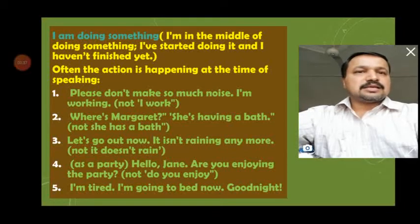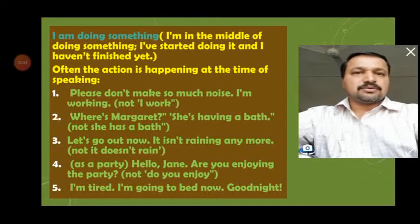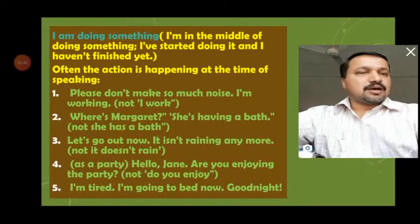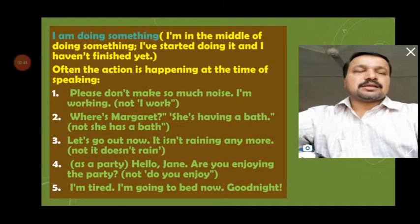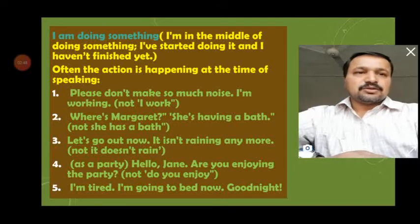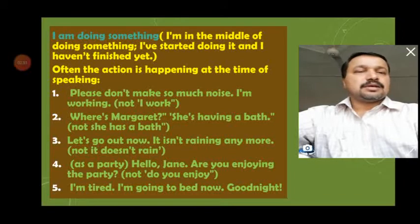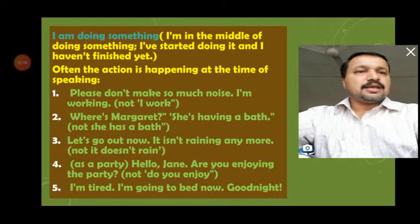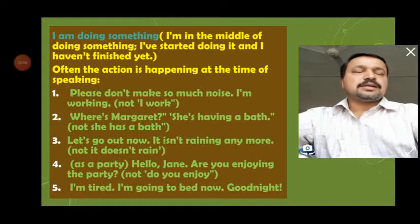Present continuous tense is used to say things that are happening at the time of speaking, things that are happening not exactly at the time of speaking but around the present time, and things that are changing around us. These are the three main uses. Let's see the first one.